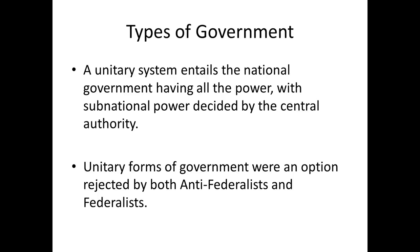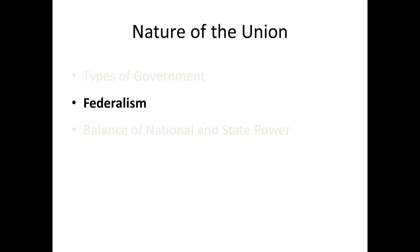Neither confederal nor unitary were looked upon that favorably at the convention. We didn't want a confederal system because that's what we already had under the Articles of Confederation — it didn't really provide for an effective national government. We didn't want a unitary system either, which would have made it easier for the government to start encroaching on liberty if the wrong person came to power, since so much power in a unitary government is concentrated at the national level.